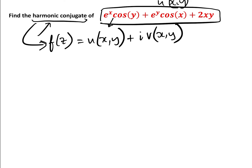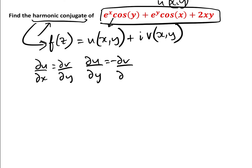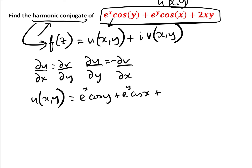Because it's a harmonic conjugate and because it's differentiable, the Cauchy-Riemann equations hold. So we know that du/dx equals dv/dy, and we know that du/dy equals minus dv/dx. We are given that u of x,y equals e to the x cos y plus e to the y cos x plus 2xy, and we need to find v.